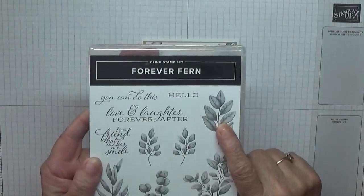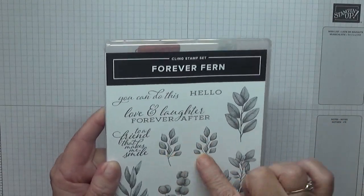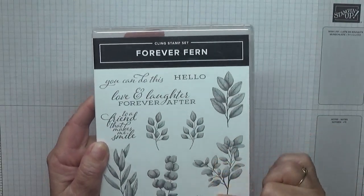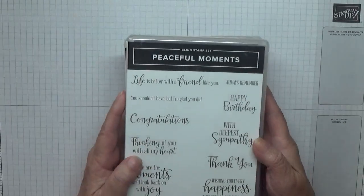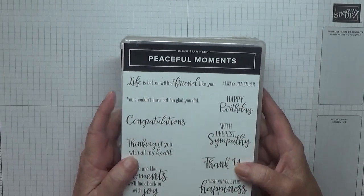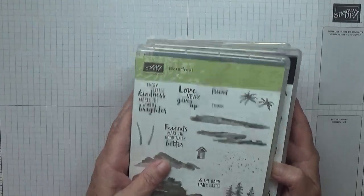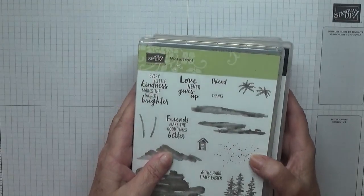To make this card I'm using a stamp set Forever Fern. I'll be using that leaf, those two leaves, and this big leaf here. For the sentiment I've got it from Peaceful Moments, just the word thank you, and I'm also using Waterfront for the speckled dots.